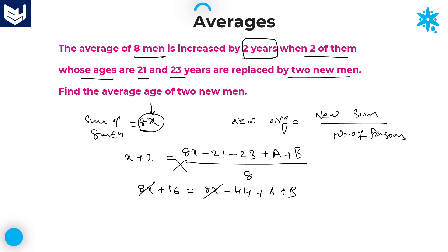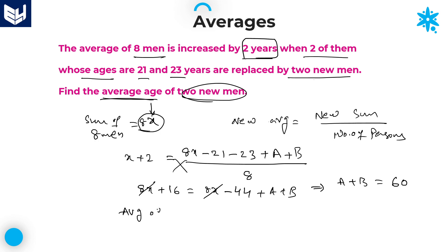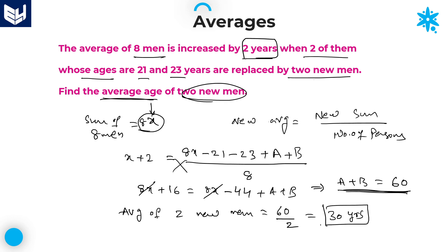The 8x terms cancel. So A plus B equals 16 plus 44, which equals 60. The question asks for the average age of the 2 new men: average equals sum of 2 new men divided by 2, which is 60 divided by 2, equal to 30 years. 30 years is the required average age of the 2 new men.